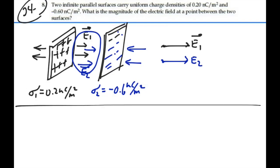Okay, so E1 is equal to sigma1 over 2 epsilon0. That's going to equal 0.2 nanocolumns, 0.2 times 10 to the minus 9, over 2 times epsilon0, 8.85, times 10 to the minus 12.